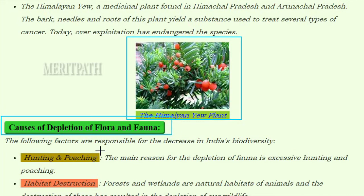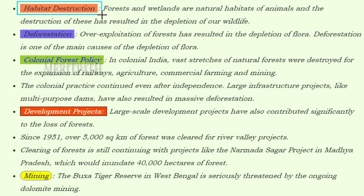The following factors are responsible for the decrease in India's biodiversity. First, hunting and poaching — the main reason for depletion of fauna is excessive hunting and poaching. Second, habitat destruction — forests and wetlands are natural habitats of animals, and their destruction has resulted in the depletion of wildlife.